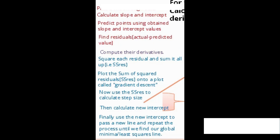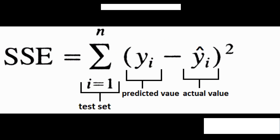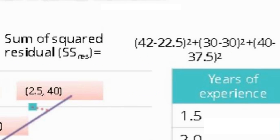Now let's compute the sum of squared residuals by calculating their derivatives. We square each residual and sum them together to get the sum of squared residuals, also known as the sum of squared error, as shown in this equation.